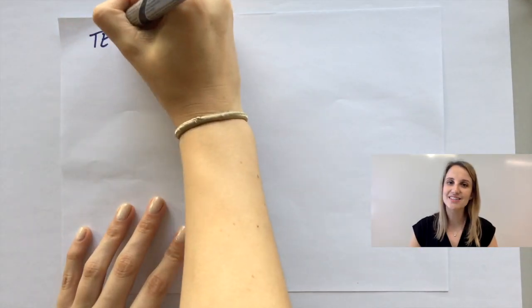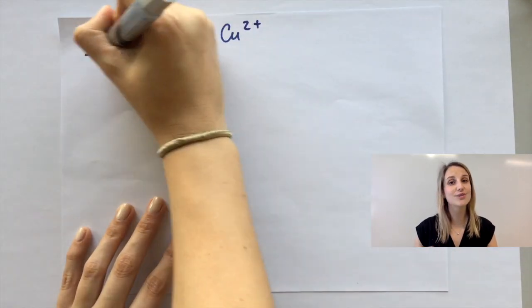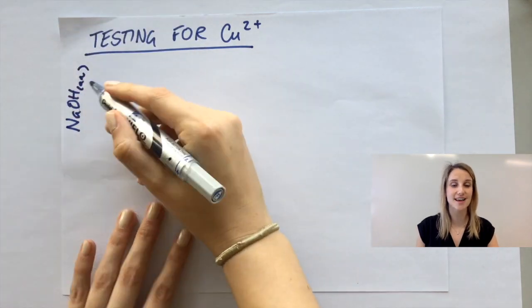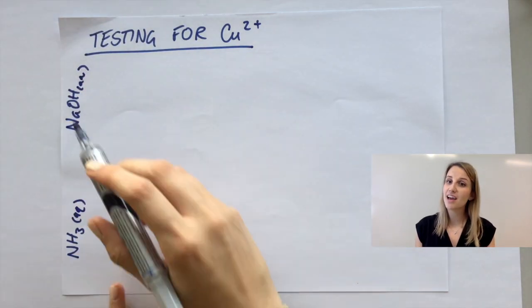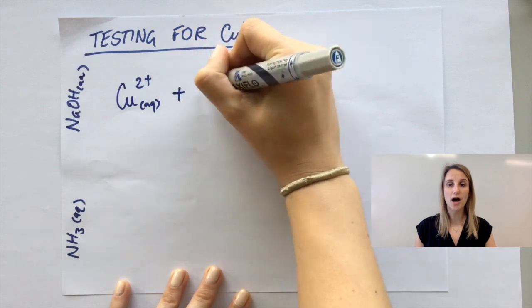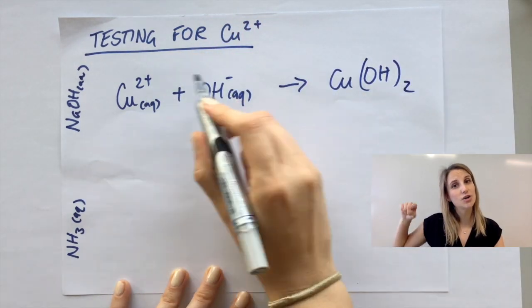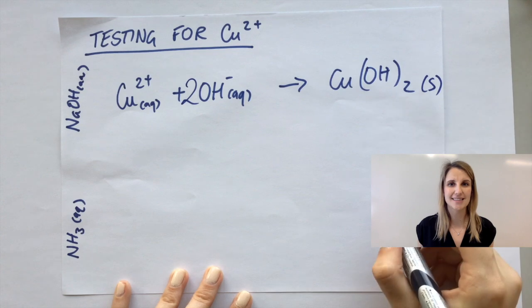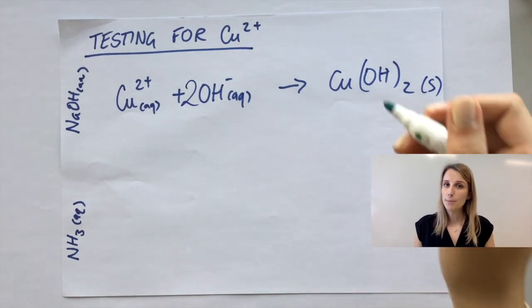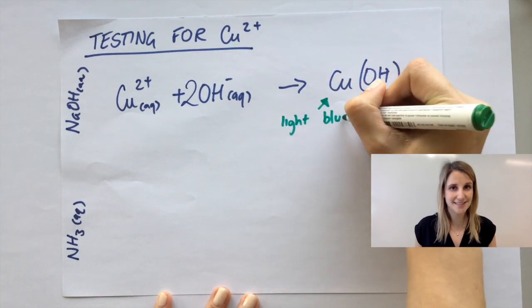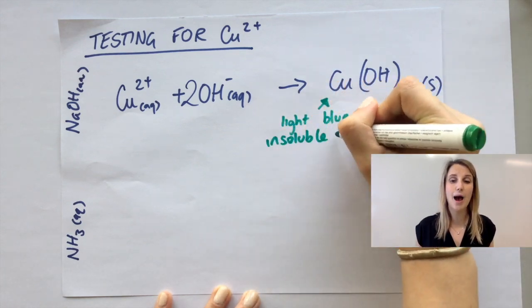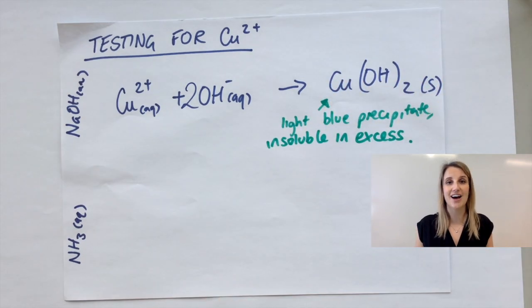Copper two plus ions in the sodium hydroxide are really reacting with the hydroxide ions and they make the light blue precipitate of copper hydroxide, which has the formula Cu(OH)2, and we balance it like this. Remember that precipitate is insoluble in excess; it won't go anywhere no matter how much of the sodium hydroxide I add.